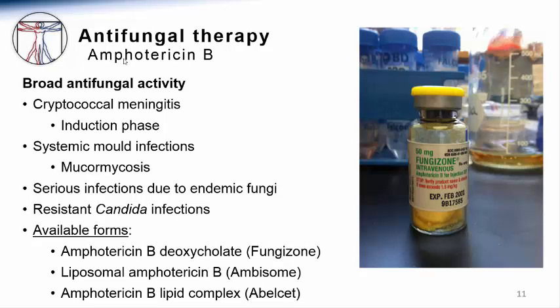Additionally, there are some fungi which, on susceptibility testing, are only susceptible to agents such as amphotericin and resistant to other antifungal agents, and these will also be treated by this agent. Available forms of amphotericin B include amphotericin B deoxycholate or standard amphotericin, and lipid-associated products such as liposomal amphotericin B (AmBisome), or amphotericin B lipid complex (Abelcet).